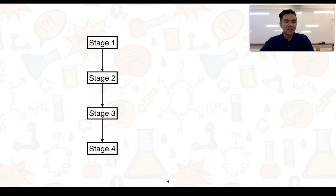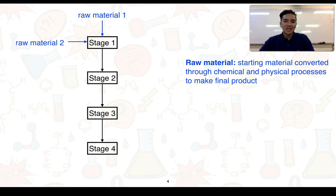To determine how a certain material is produced, manufacturers look at using what we call a flowchart. Flowcharts start off with various stages, which represent different physical and chemical processes that try to convert starting materials into a final product. In order to do this, we would firstly need raw materials. We can define raw materials as starting materials that are converted through chemical and physical processes designed to make a final product.